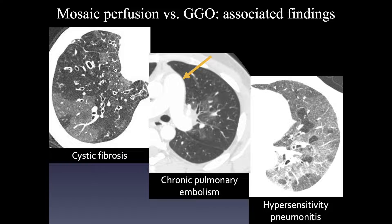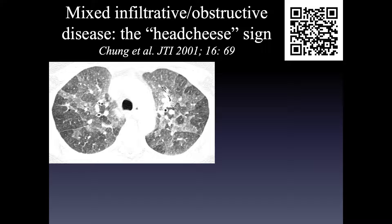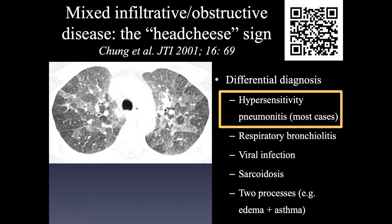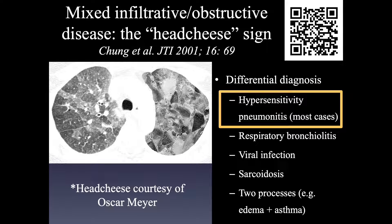This patient actually has both mosaic perfusion and ground glass opacity, as evidenced by three attenuations of lung: two lucent, two opaque, and relatively normal intermediate attenuation lung. This combination of three densities of lung has been described in several ways, but probably the most graphic is the head cheese sign. Head cheese is a meat that's sliced up and has a very similar appearance to the CT shown here. The differential diagnosis includes several entities, but the vast majority of cases are hypersensitivity pneumonitis.